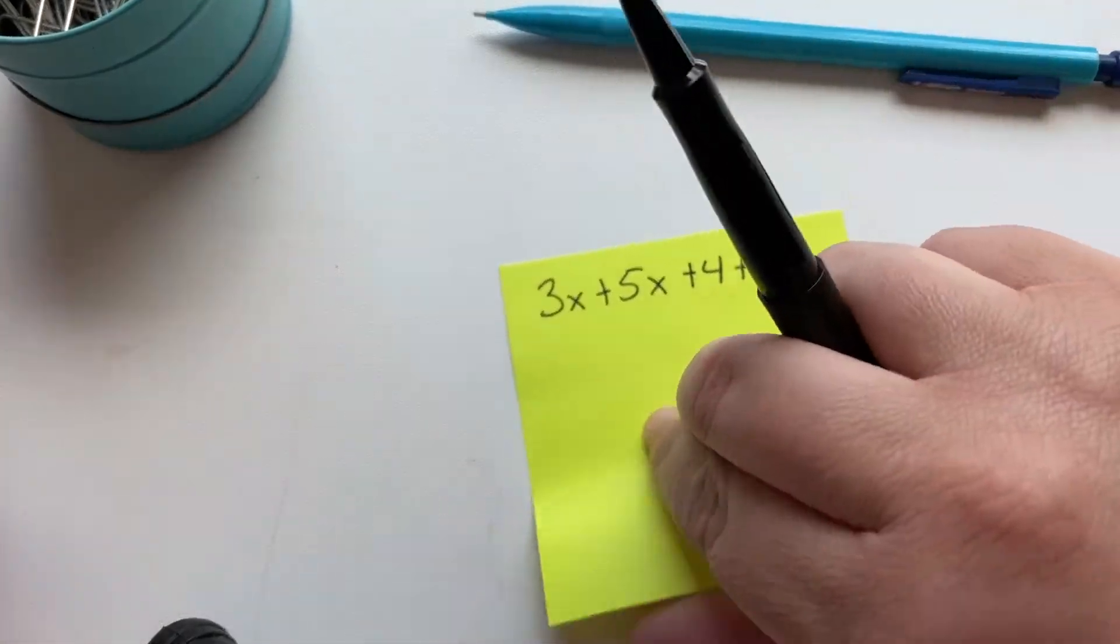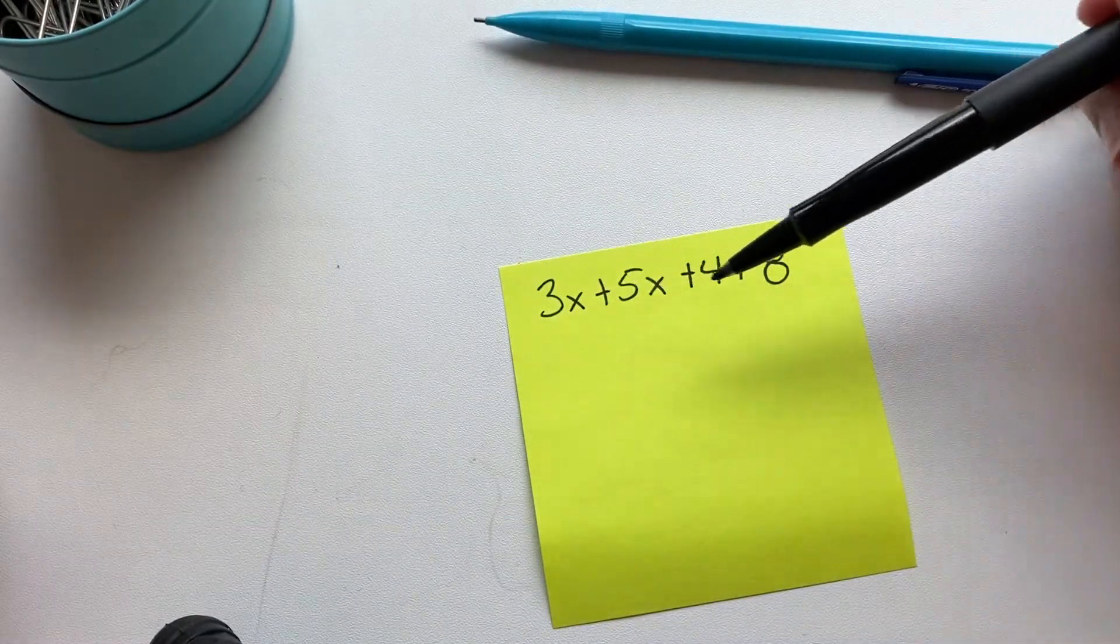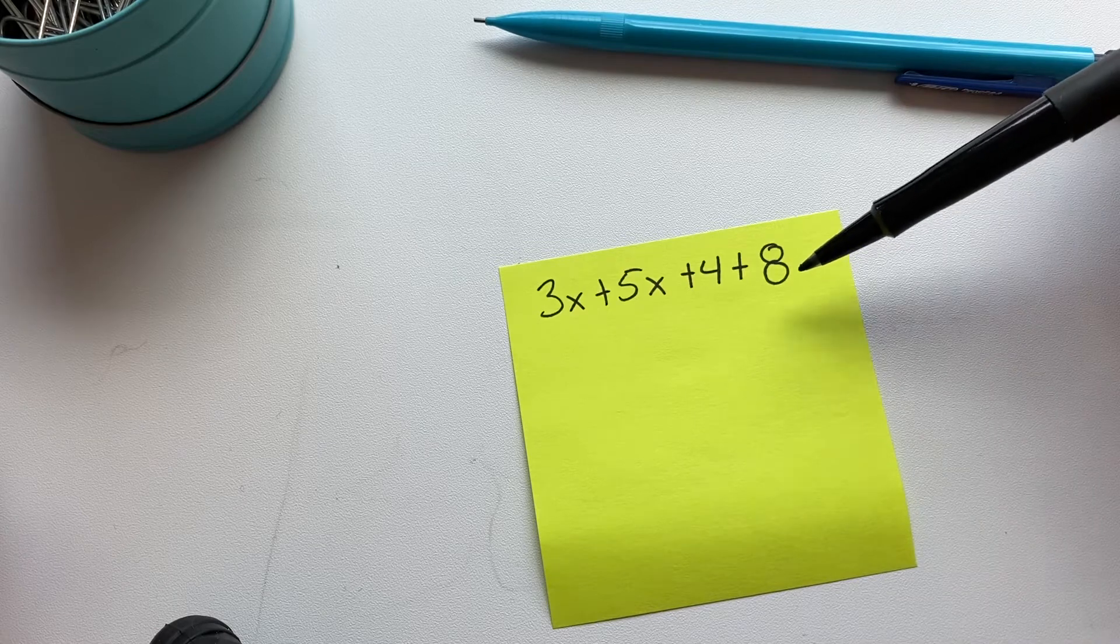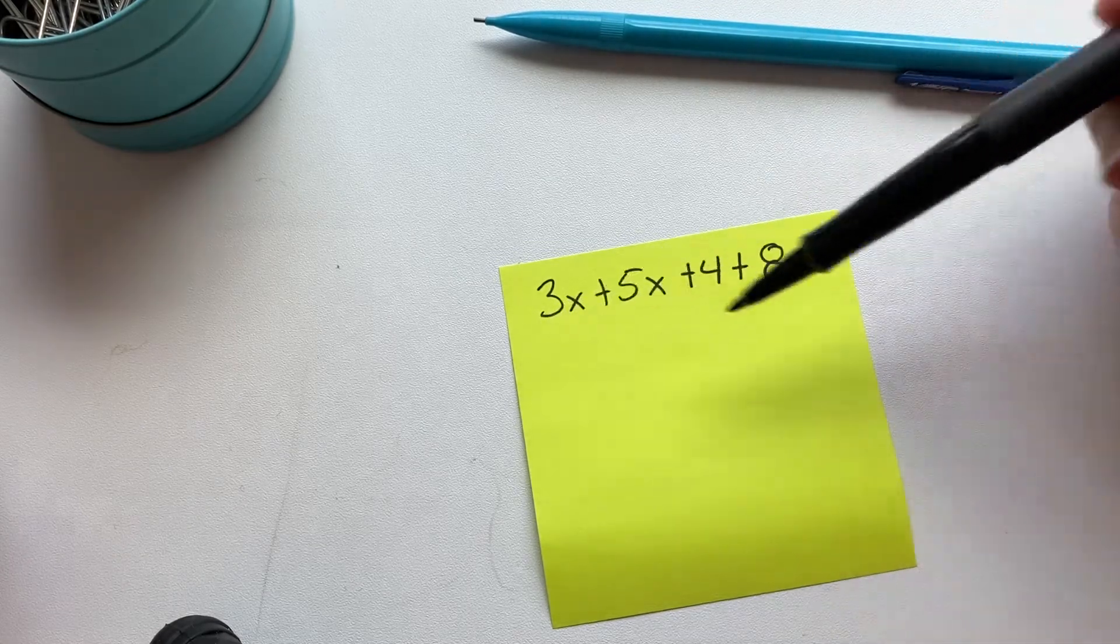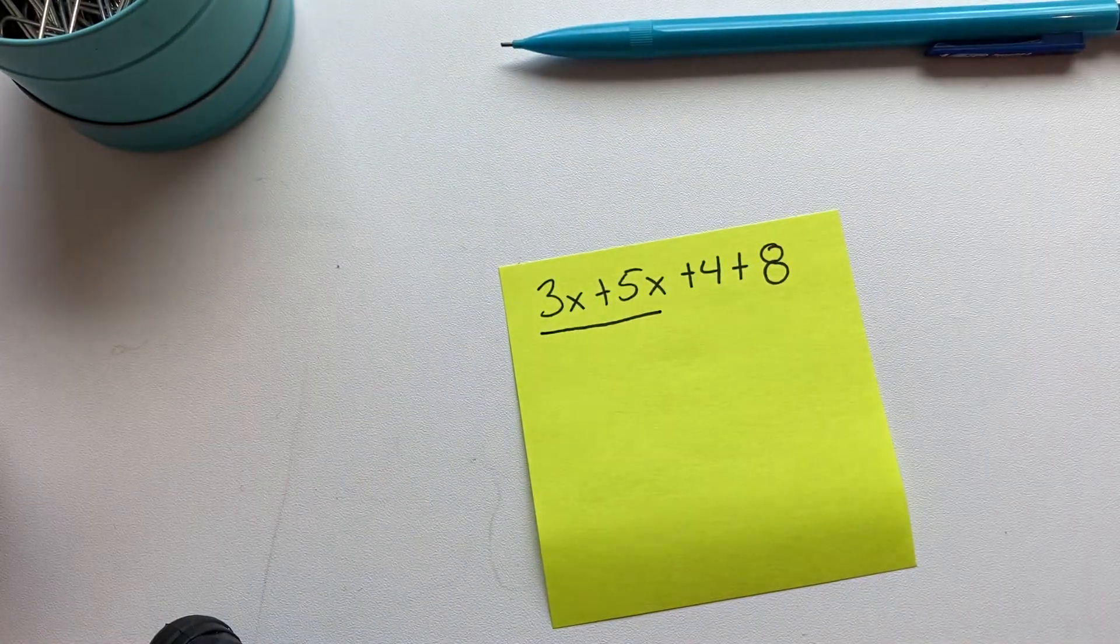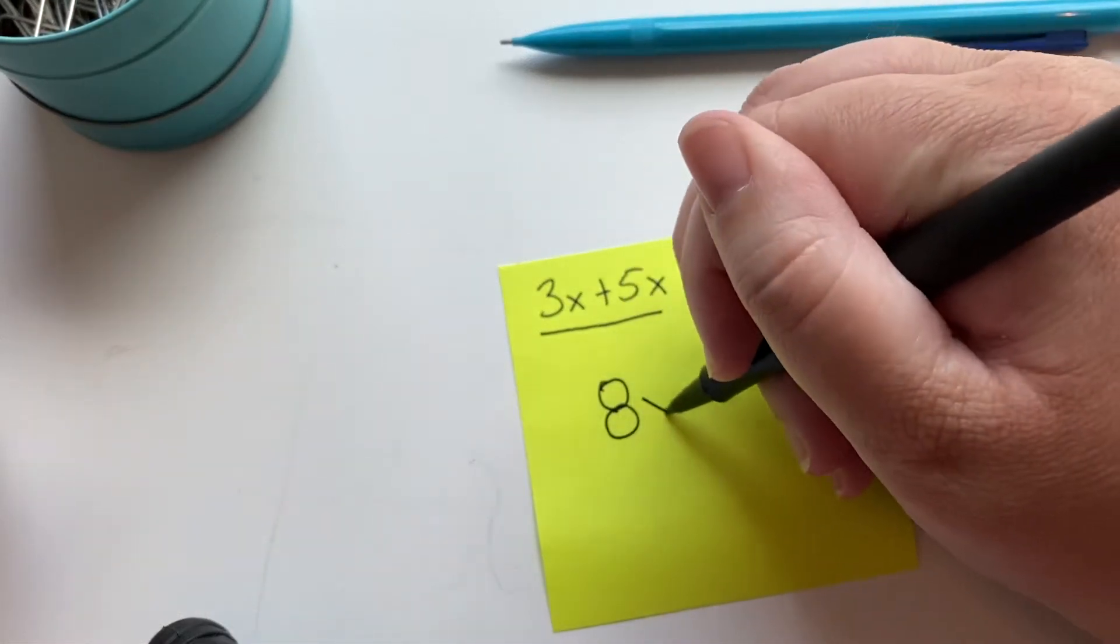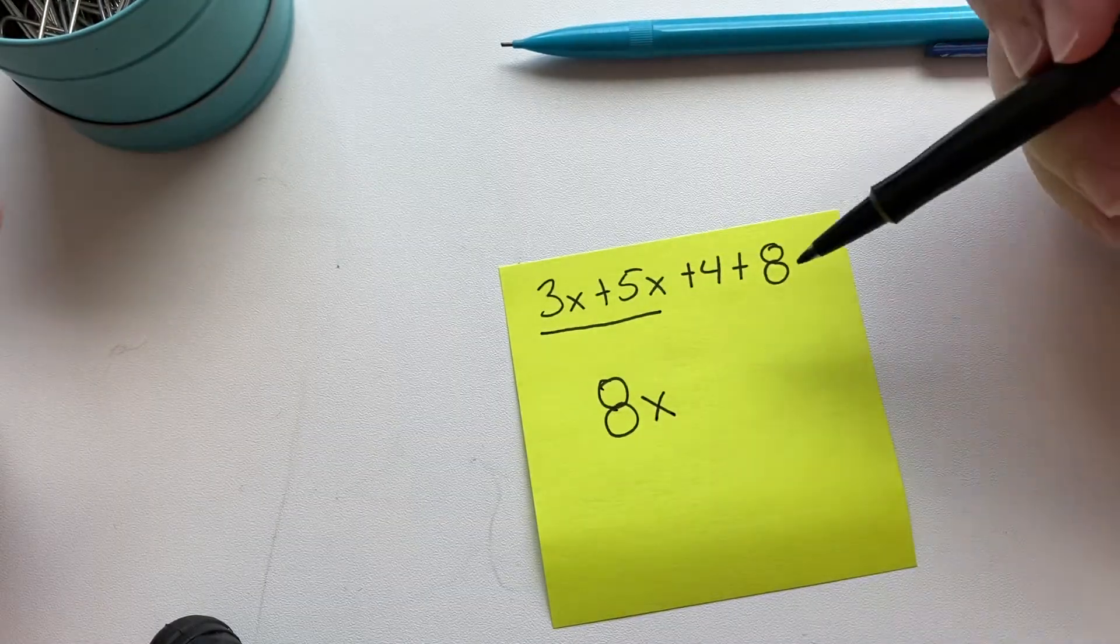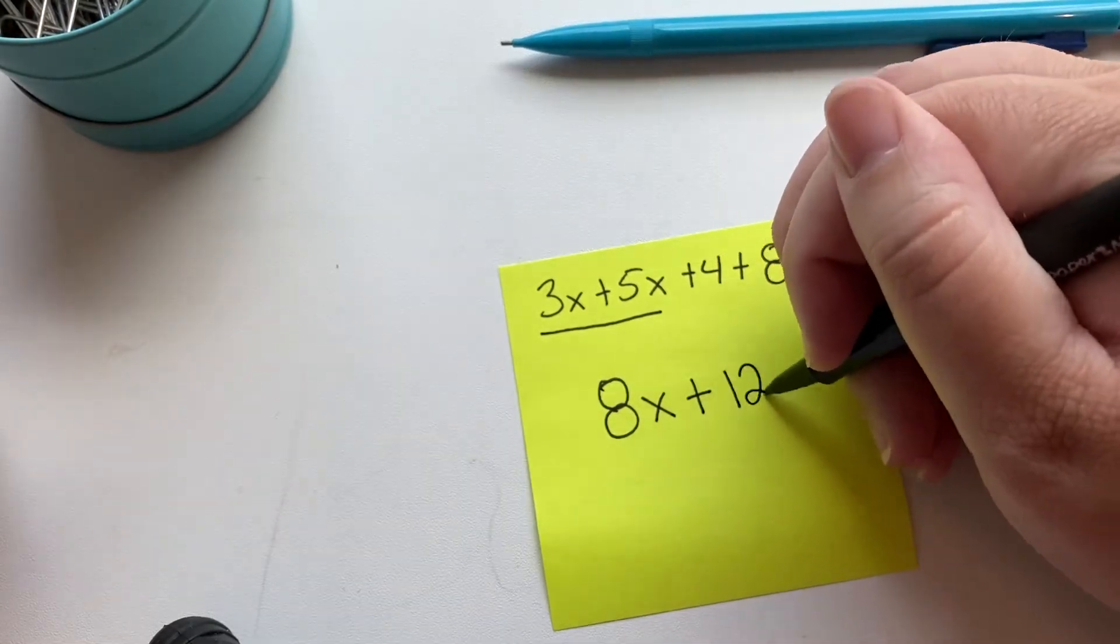So let's look at some examples. We have 3x plus 5x plus 4 plus 8. So we can only combine these together because they have the same variable. If you have 3x and you have 5x, you add them together, you have 8x. And if you have a regular 4 and a regular 8, you add them together, you have 12.